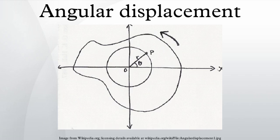Angular displacement of a body is the angle in radians through which a point or line has been rotated in a specified sense about a specified axis.